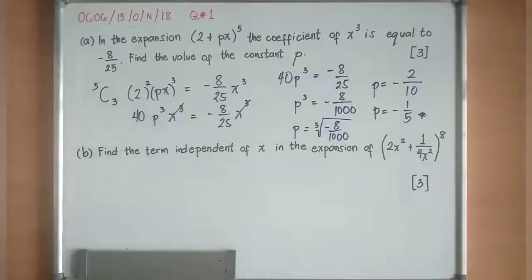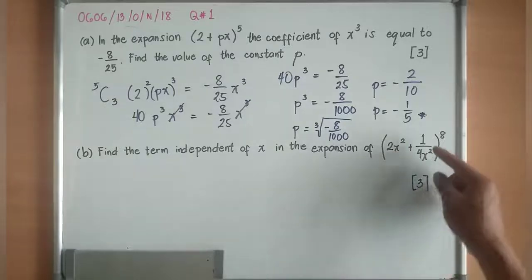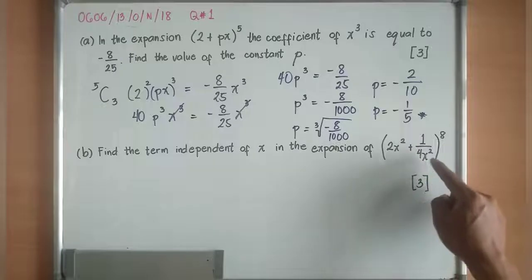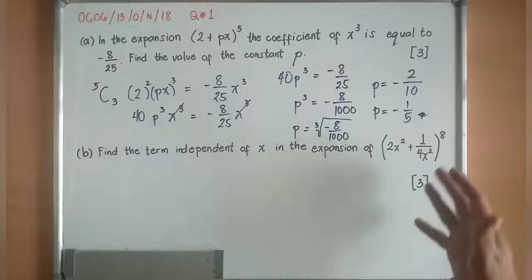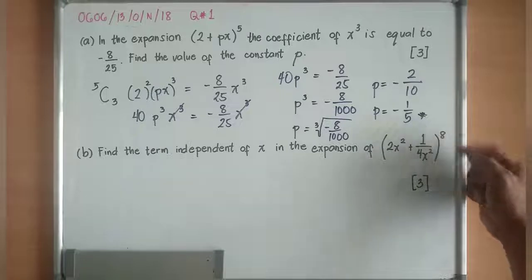There's no variable x. Basically, it's another way of saying find the constant term in this expansion. When I say constant, it's not attached to any variable x. So the first thing that you need to think here is this is already x^2, this is over x^2. They are balanced already. If I will multiply these 2, I won't have any variable x. But of course, you have to take note of the index 8.